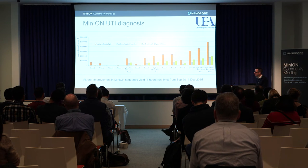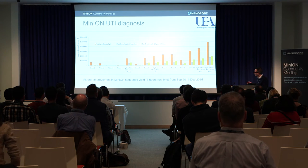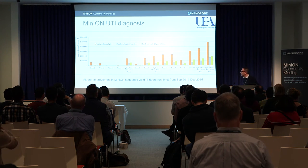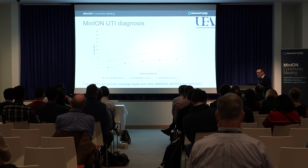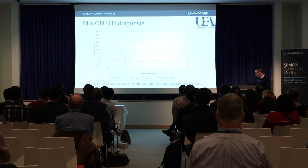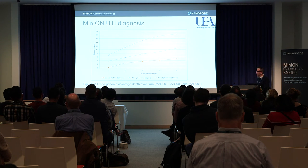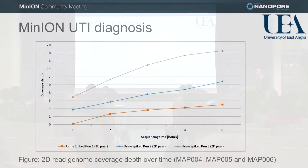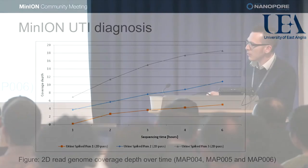We weren't very good at the start — some of the reagents and flow cells weren't excellent — but we've been getting better all the time. This also illustrates the three spiked samples of this nasty E. coli using three chemistries: MAP04, MAP05, and MAP06. You can see the difference in yield after one hour of sequencing between the three chemistries. The shorter the sequencing time needed to get decent coverage, the better.